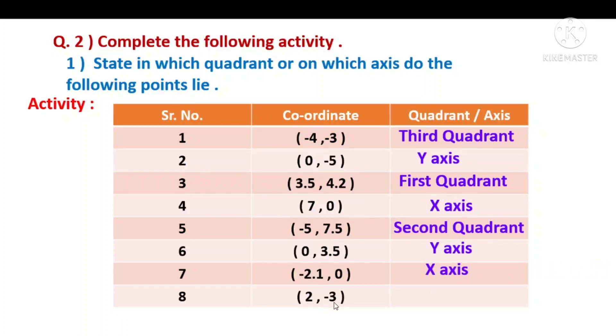Point 8: (2, -3), plus and minus, meaning which quadrant - fourth quadrant. These are the answers shown in purple color.